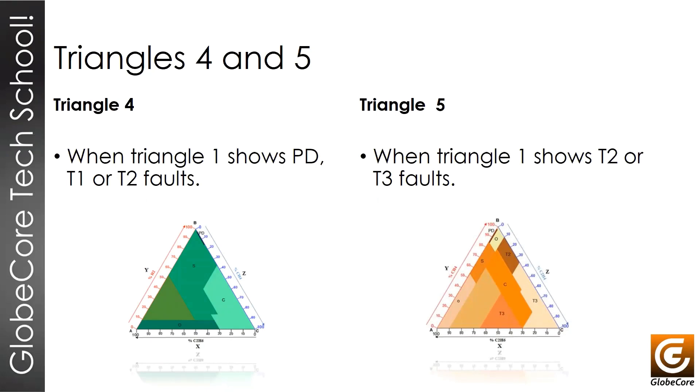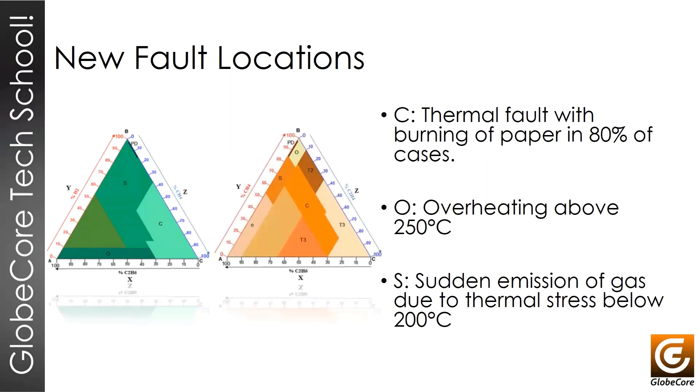The T4 triangle is used for a more in-depth study of faults related to partial discharges, T1 or T2 faults. T5, the fifth triangle, is used in case of high energy faults, T2 or T3. The T4 and T5 are not used in cases when the problems are purely electrical. These triangles additionally define three new fault types: a type C fault, and types O and S. A C-type fault is a thermic fault that is accompanied by paper carbonizing in 80% of cases. An O-type fault is an overheating with temperatures over 250 degrees centigrade. The S-type fault is unexpected gassing in mineral oil that happens due to thermal stress and usually due to poor oil refining.